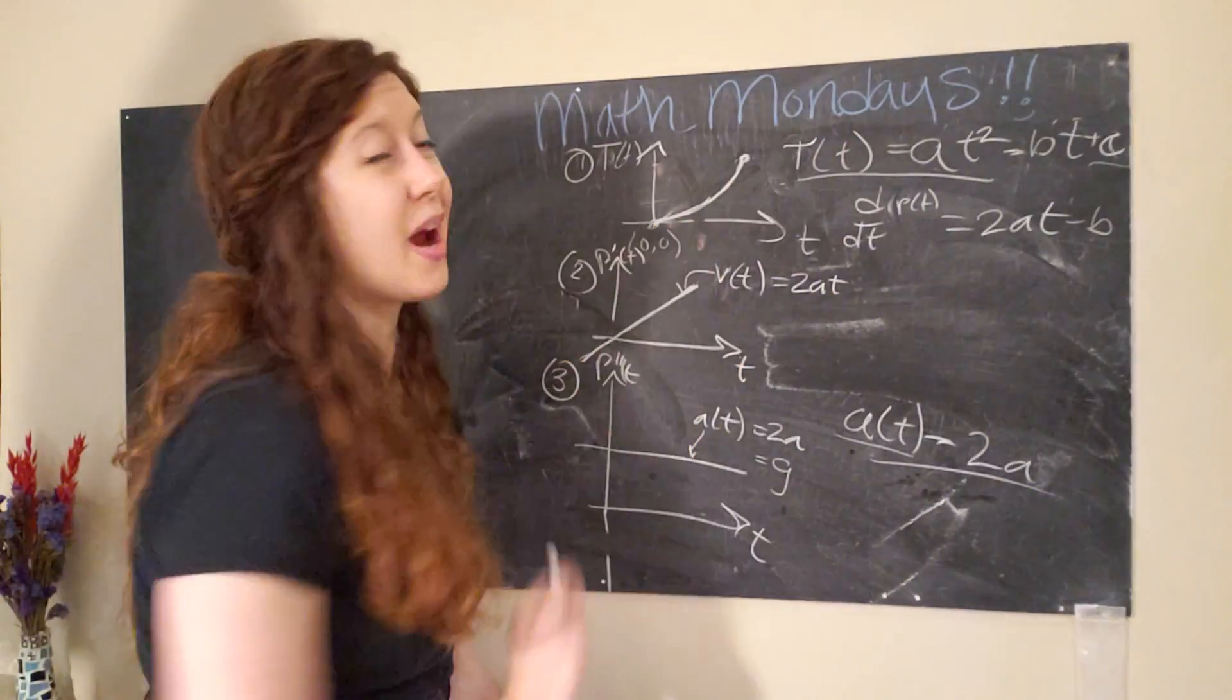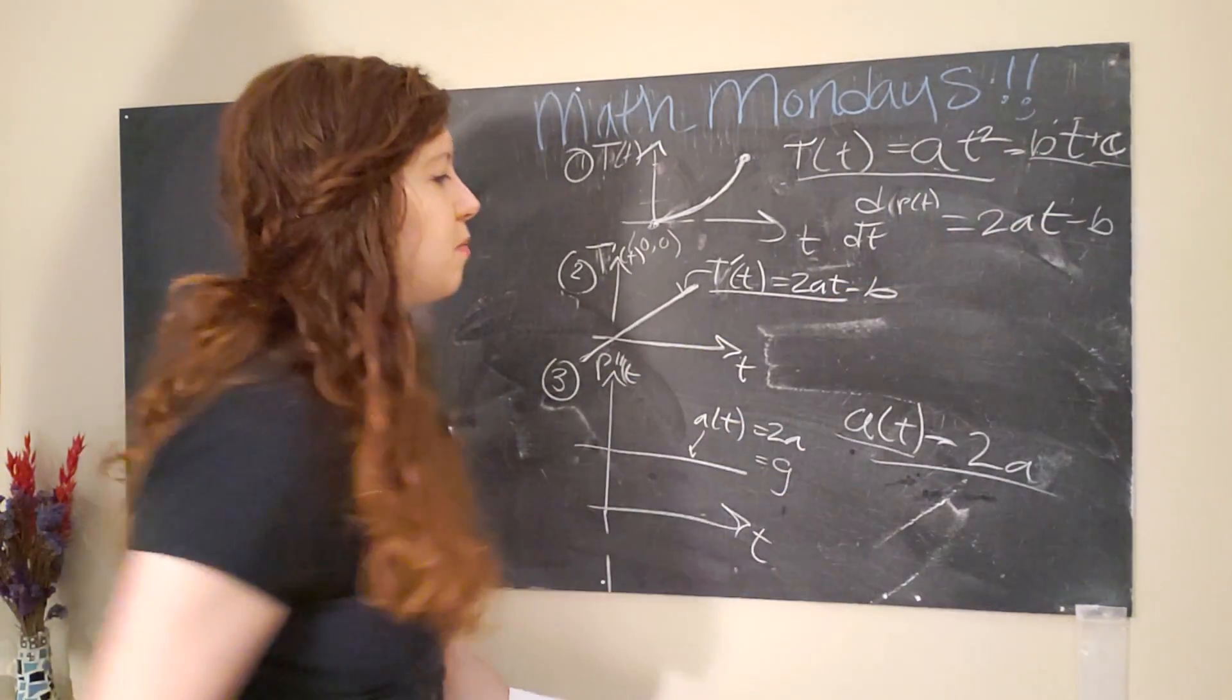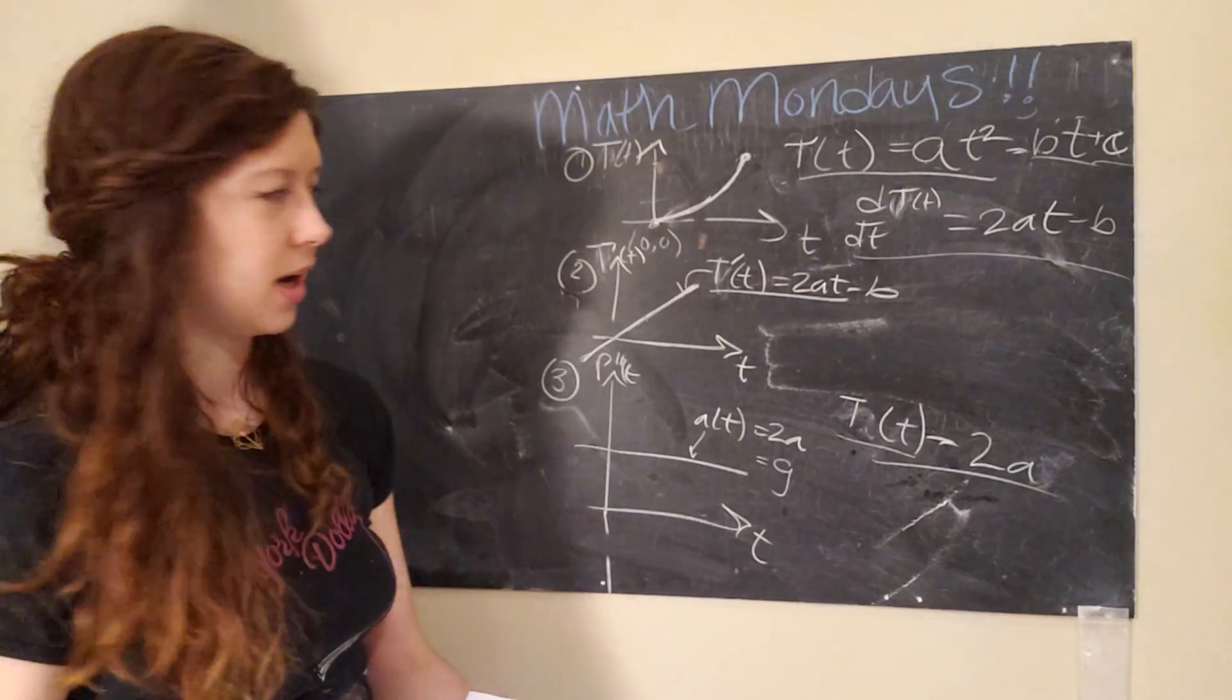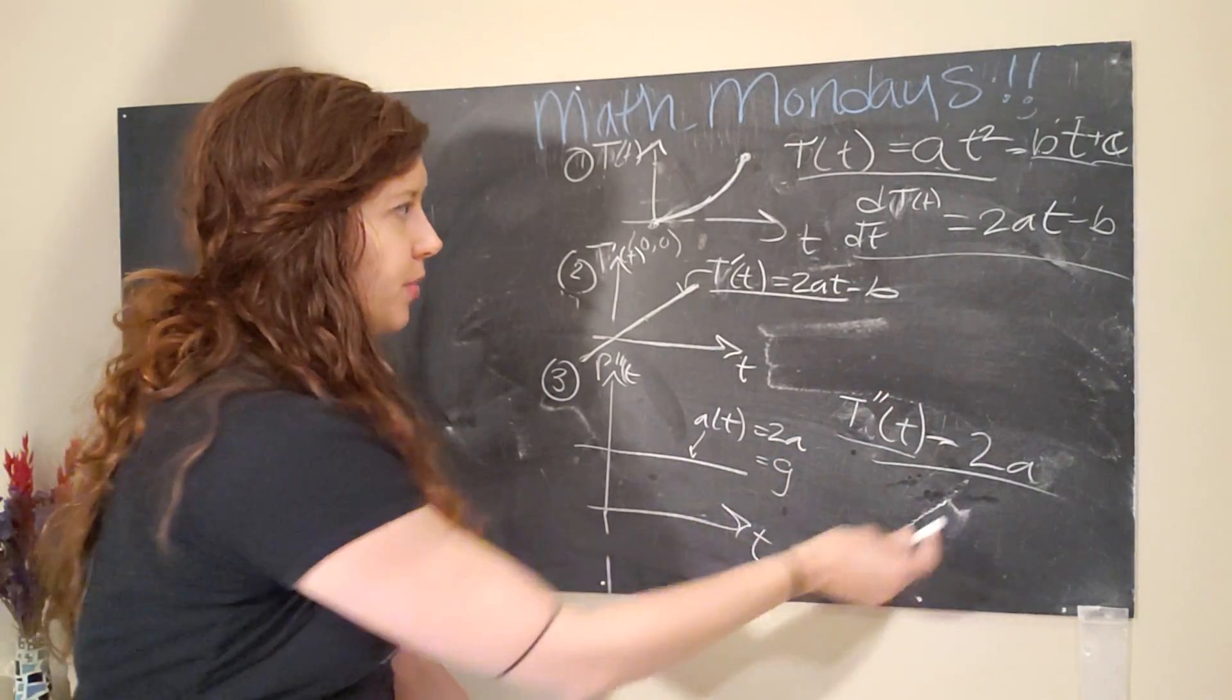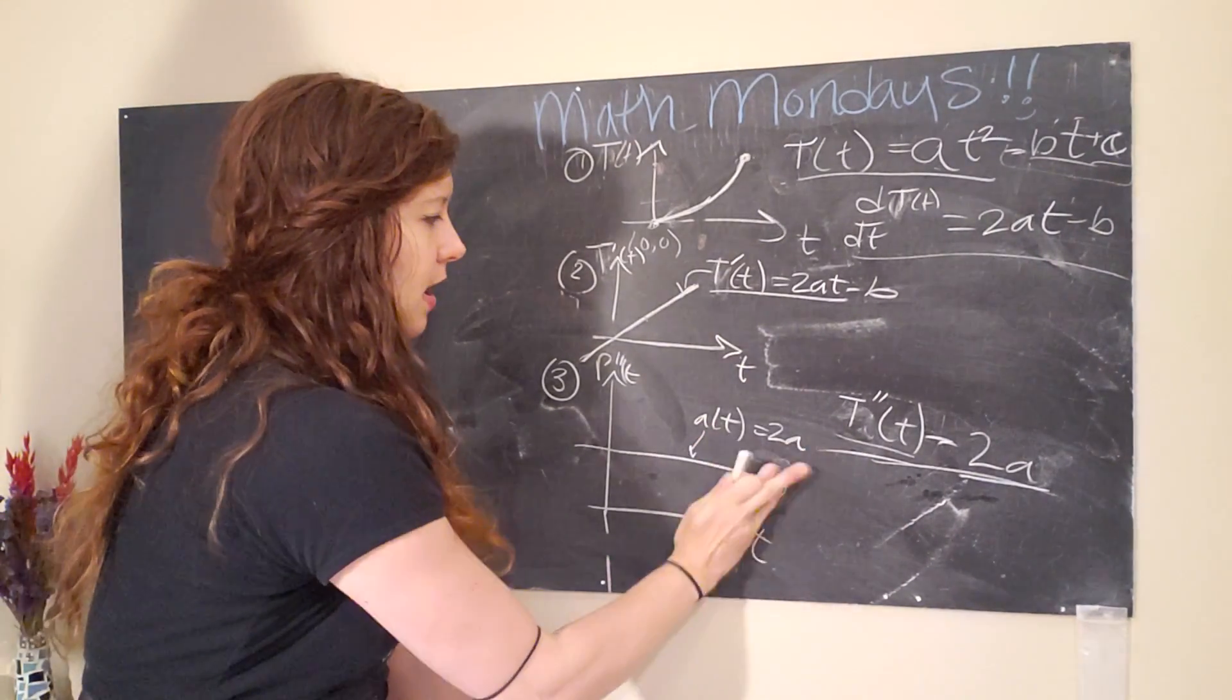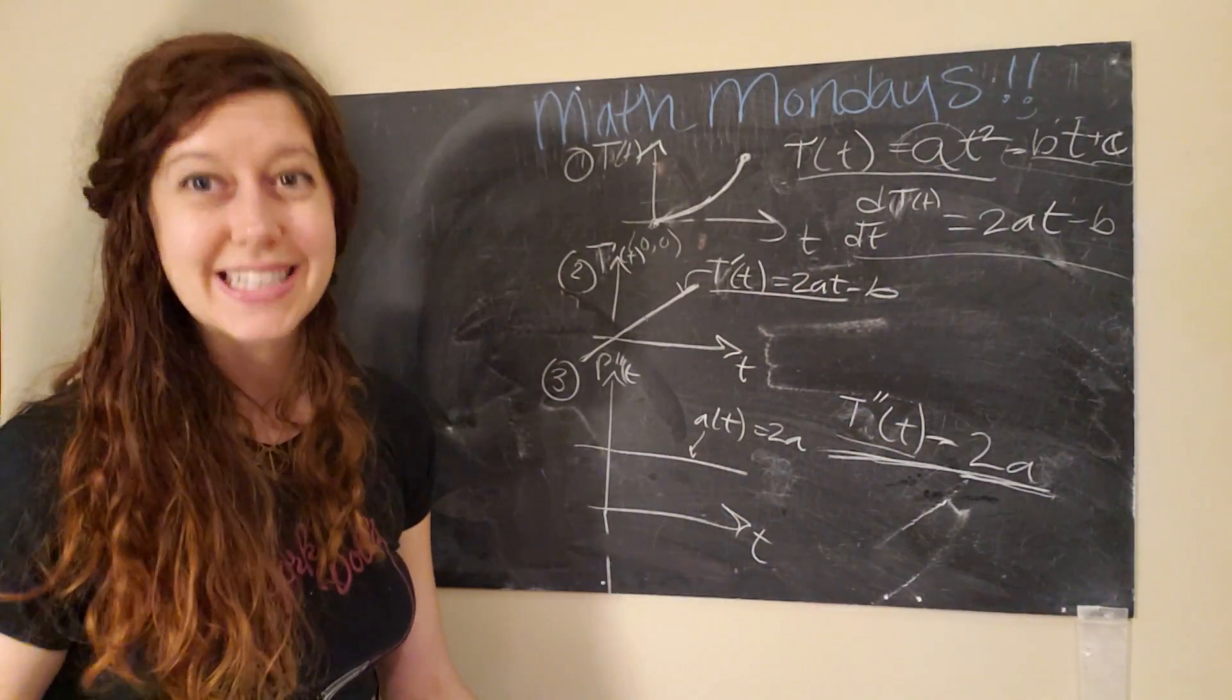So then we want to ask, okay, well, how is temperature changing over time? So I'm going to call this t prime of t, and the first derivative would be 2at minus b, because we have negative bt term here. So that's our first derivative. And our second derivative, which tells us how fast the change in temperature is changing, aka how fast is temperature change accelerating, is 2a. And so that's really interesting to me because even though we have these extra terms over here, those actually go away in the second derivative.